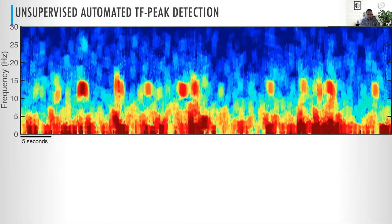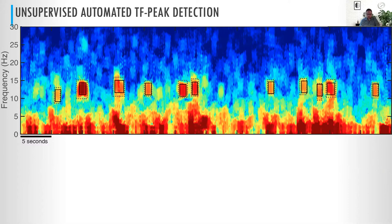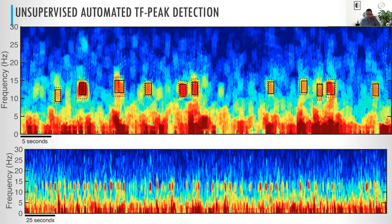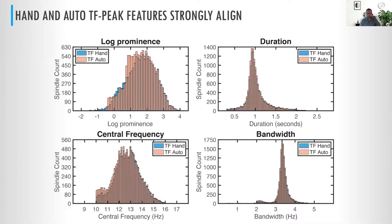What we've done instead is use the properties of our TF peaks to automatically identify them using an unsupervised method that does not require a fixed threshold — it's set automatically per person. Here are the ones hand-scored by our research tech, and when we apply our method, this is what we get. We can convince ourselves this is doing a good job because when we look at the TF peaks scored by hand and those stored by our auto method, we almost identically match up these distributions.